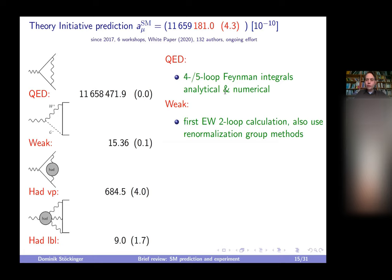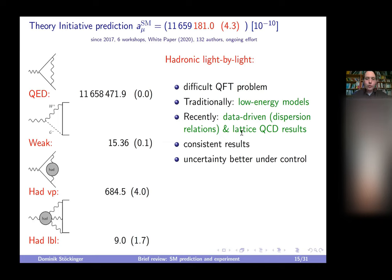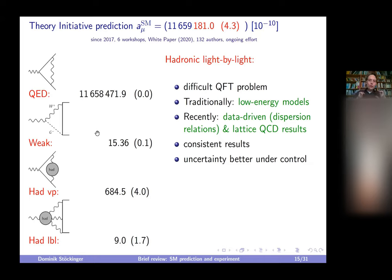From a BSM perspective, I stress that everything contributes, including the heaviest Standard Model particles. The top quark and the Higgs appear at the two-loop level as part of the weak interaction contributions, each contributing at the level of ~10⁻¹⁰. The current experimental precision is 4×10⁻¹⁰, so even the top and Higgs matter at a relevant level.